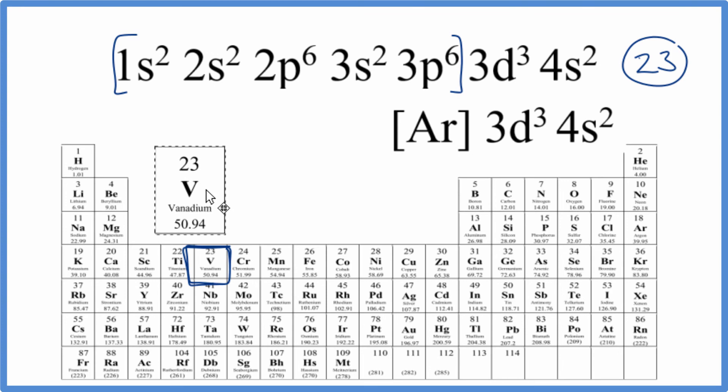Vanadium, it has 23 total electrons. So those are the two ways you can find which element is represented by this 1S2, 2S2, 2P6, 3S2, 3P6, 3D3, 4S2 electron configuration.